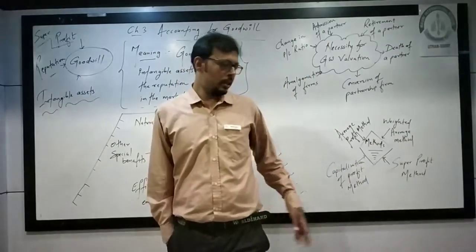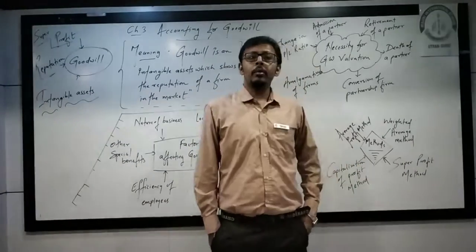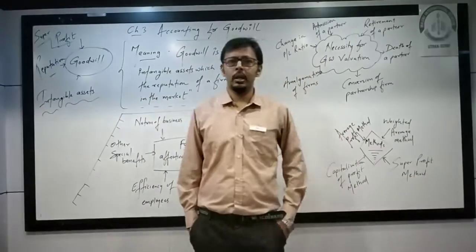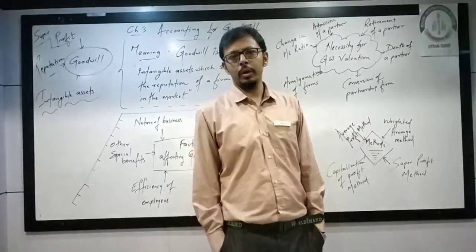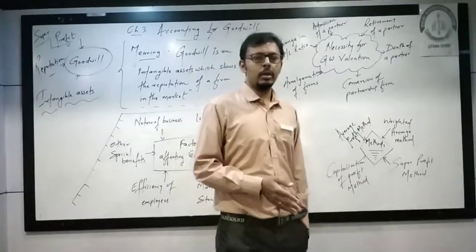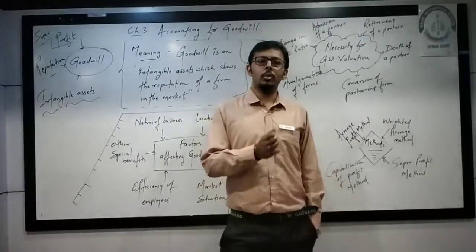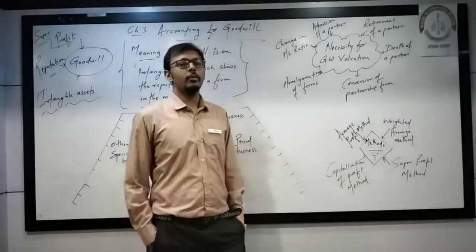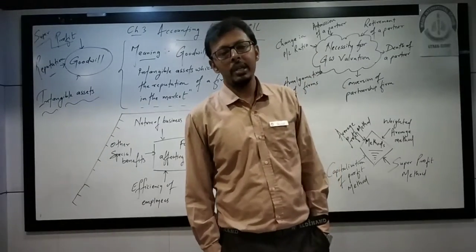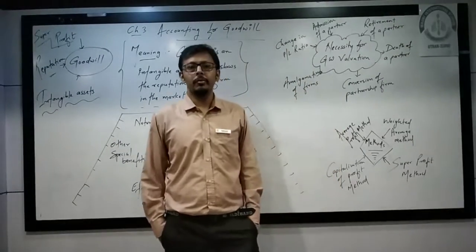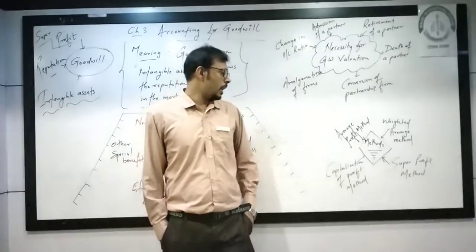Next is the Super Profit Method. First, find the average profit. Then find the expected profit: Capital Employed × Expected Rate of Return. To find Capital Employed: Total Assets − Total Outside Liabilities. Then: Super Profit = Average Profit − Expected Profit. And: Goodwill = Super Profit × Number of Years of Purchase. The last method is the Capitalization of Profit Method. First find the average profit, then: Capitalized Profit = Average Profit ÷ Expected Rate of Return × 100. Then: Goodwill = Capitalized Profit − Capital Employed.